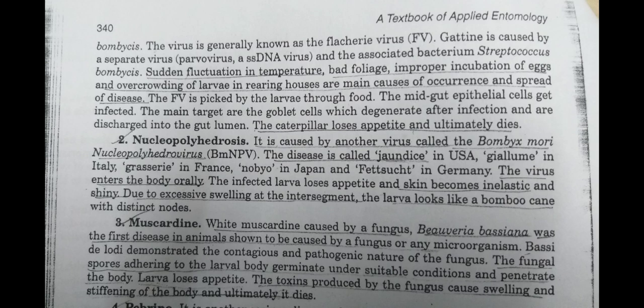Gatyne is caused by a separate virus called Parvovirus, which is a single-stranded DNA virus. Predisposing factors include sudden fluctuation in temperature, bad foliage, improper incubation of eggs, and overcrowding of larvae. The caterpillar basically loses appetite and usually dies.